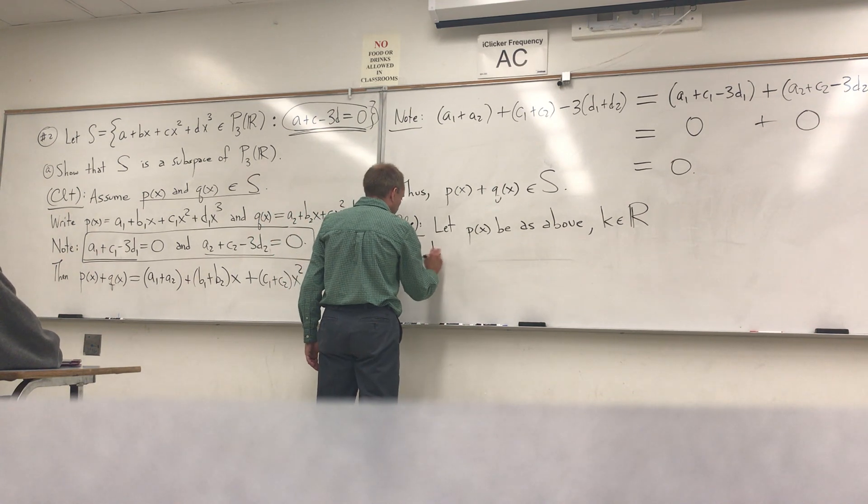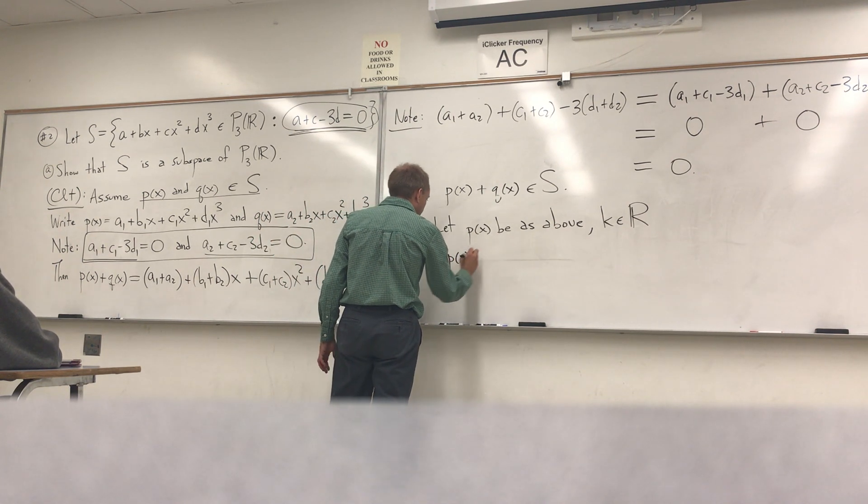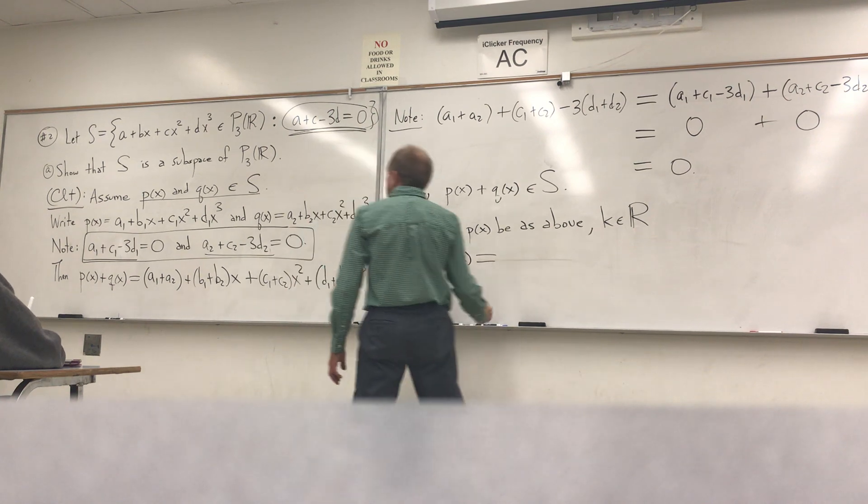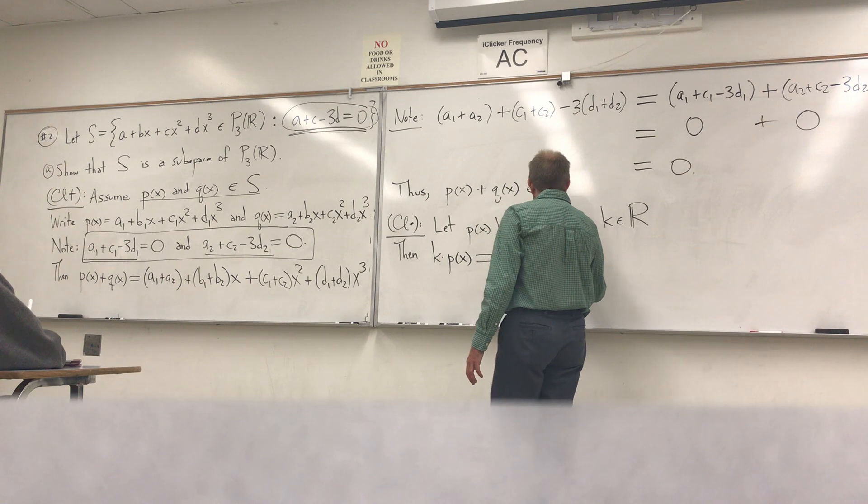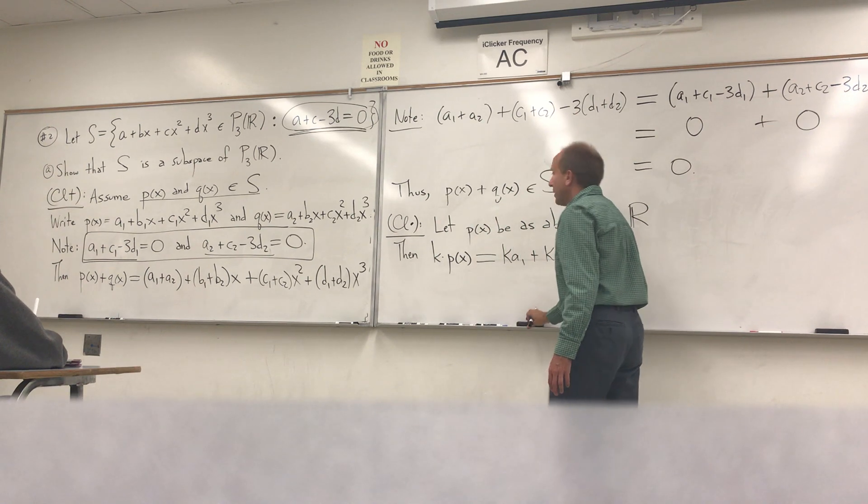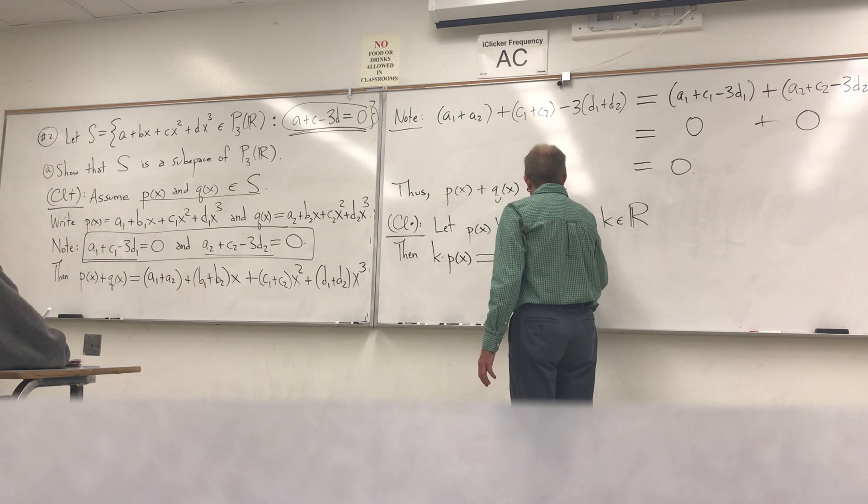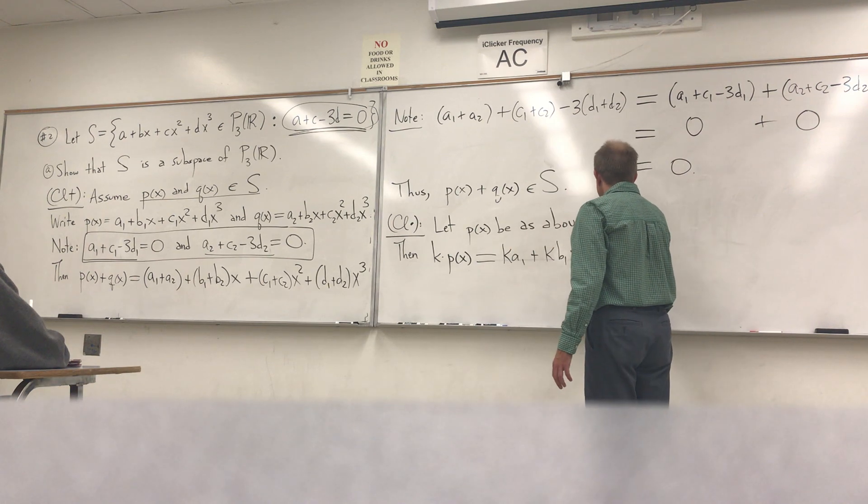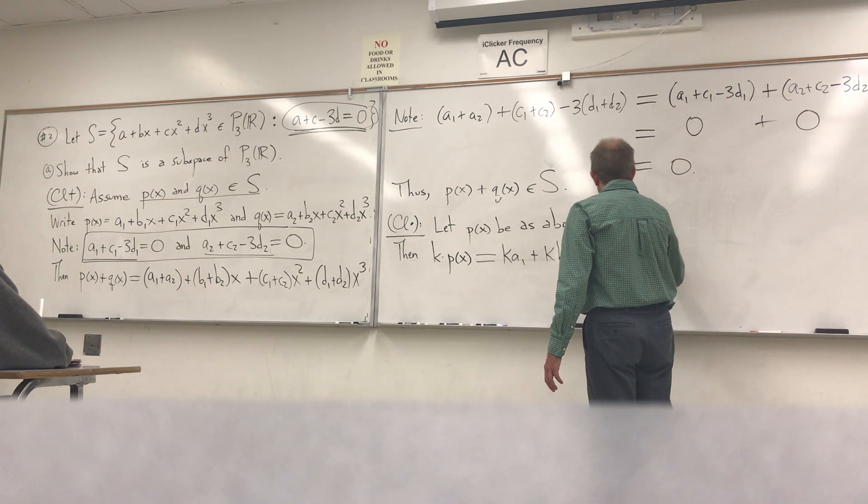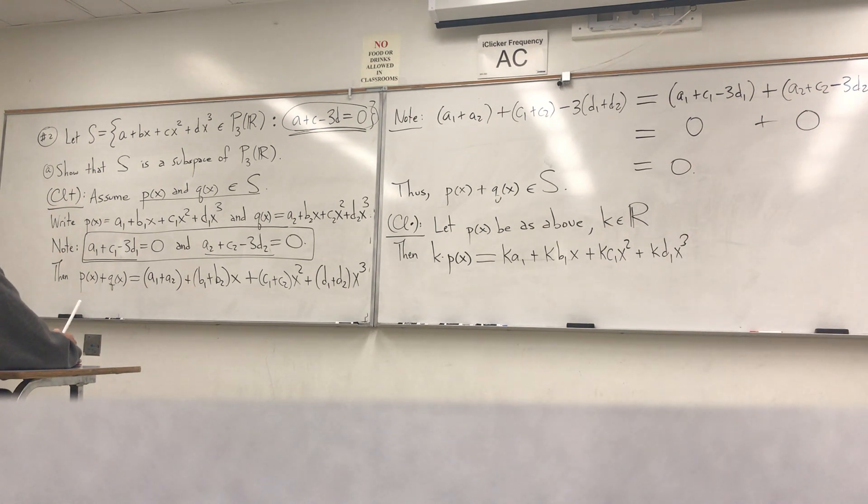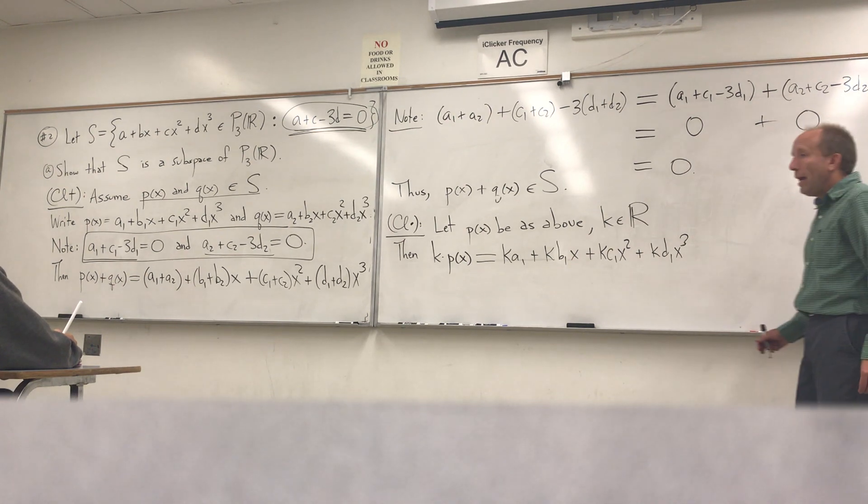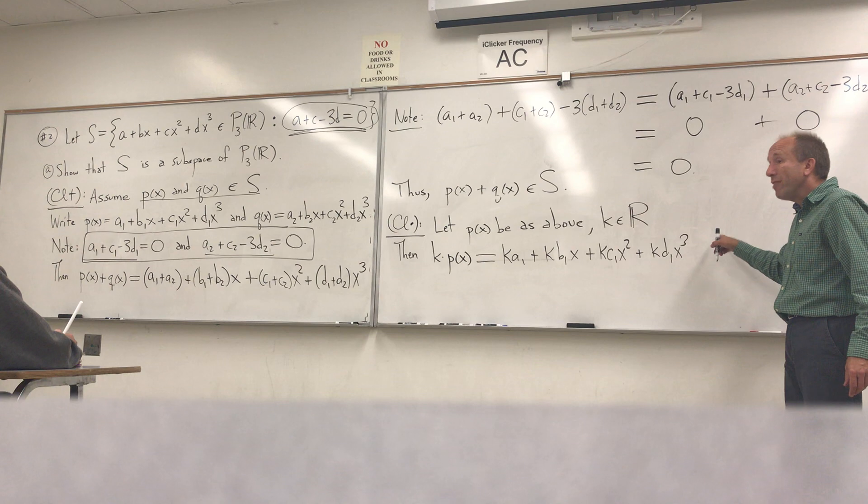And what we want to do is look at k times p of x. So let's just write out what it is, first of all. k times p of x is literally just ka1 plus kb1x, I'm sorry, kb1. Sorry. So ka1 plus kb1x plus kc1x squared plus kd1x cubed. OK. So we just write that down first.